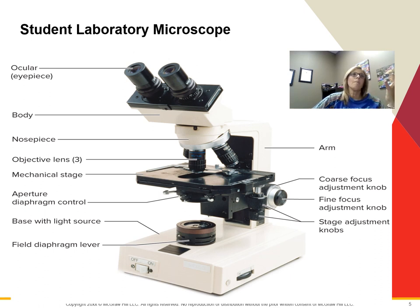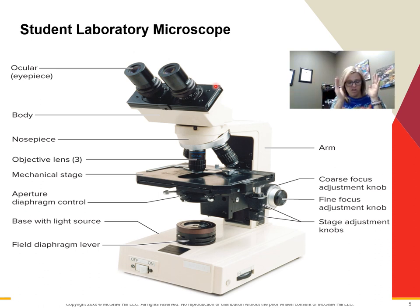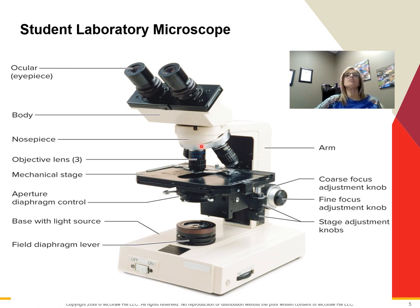Here is your microscope. You're going to be labeling one of these — I prefer the term ocular rather than eyepiece, so use ocular on your labeling for the test. These microscopes have two eyepieces on them, and in the lab you can push them together or spread them further apart to get one field of view. We have four objective lenses on our microscopes in the lab; this diagram only shows three. We have four.